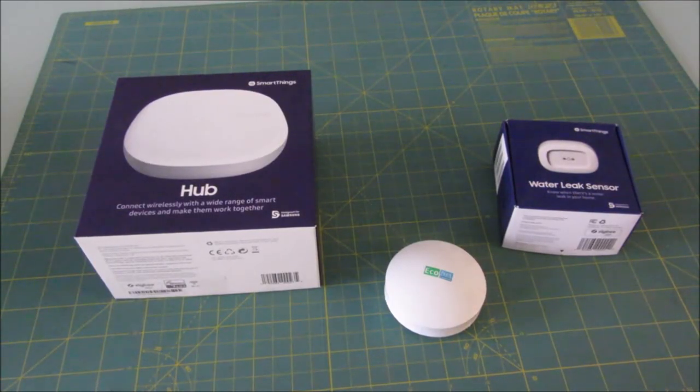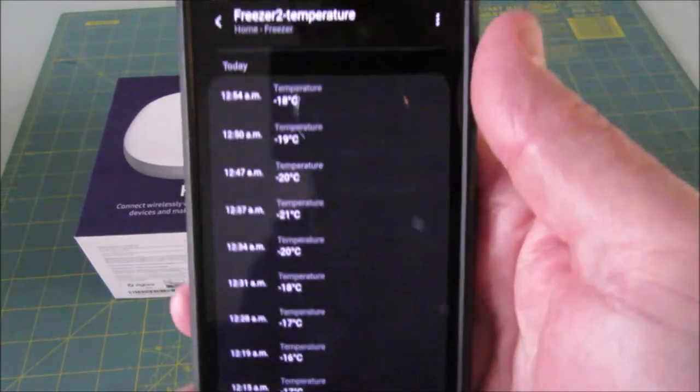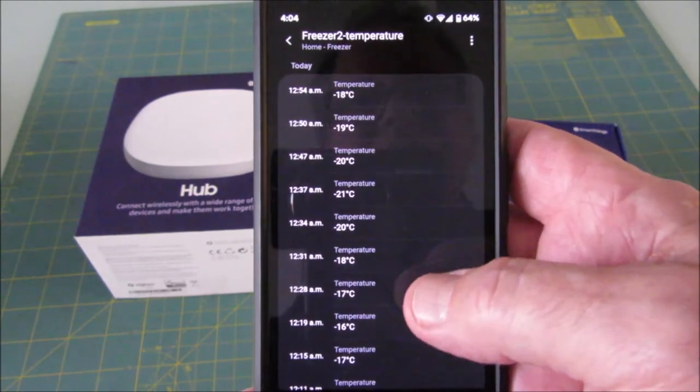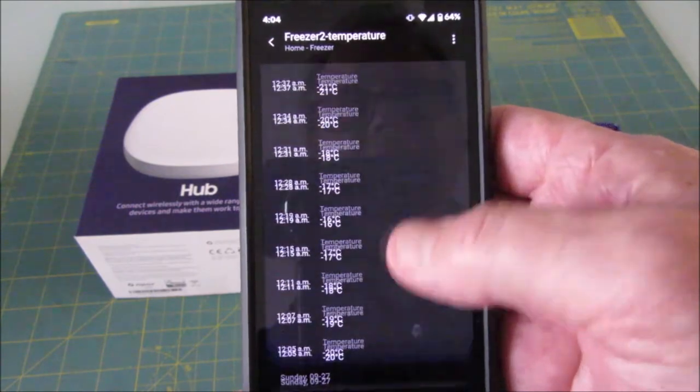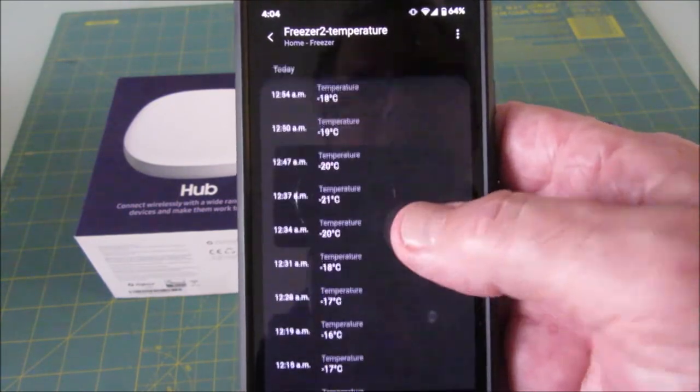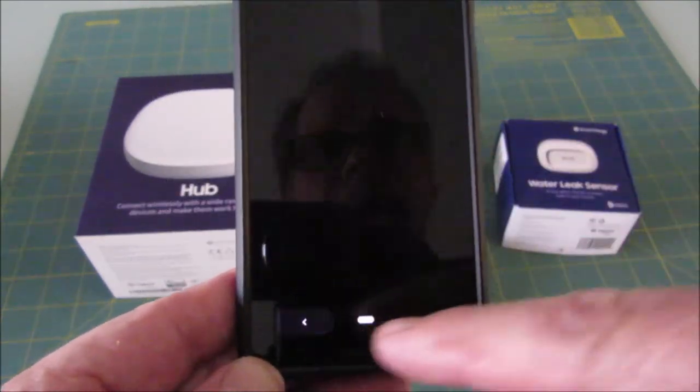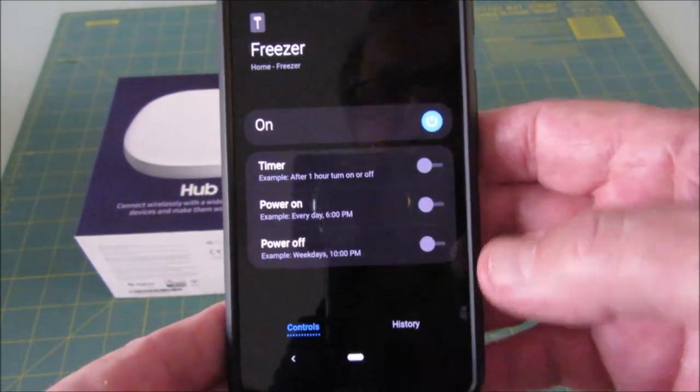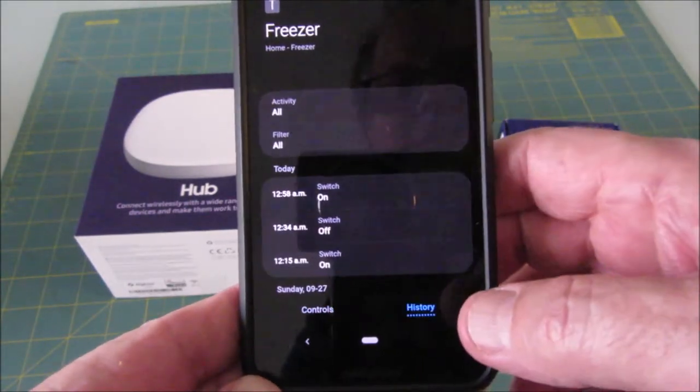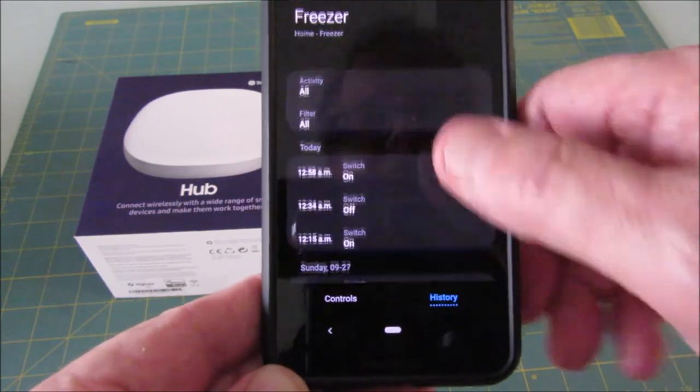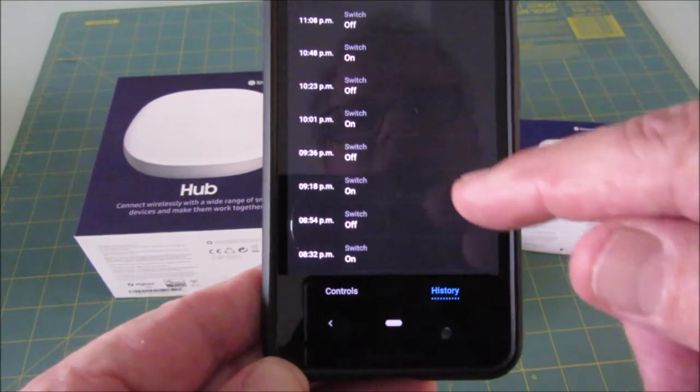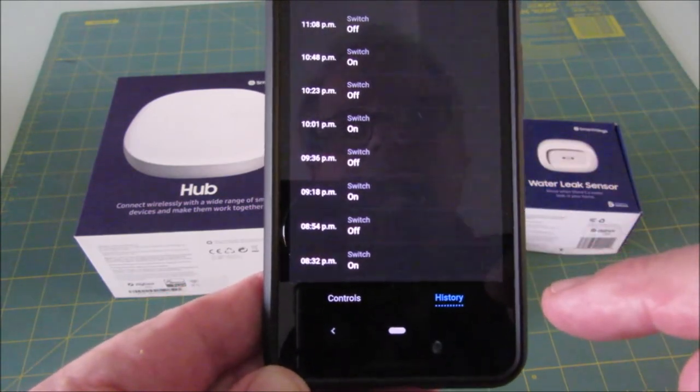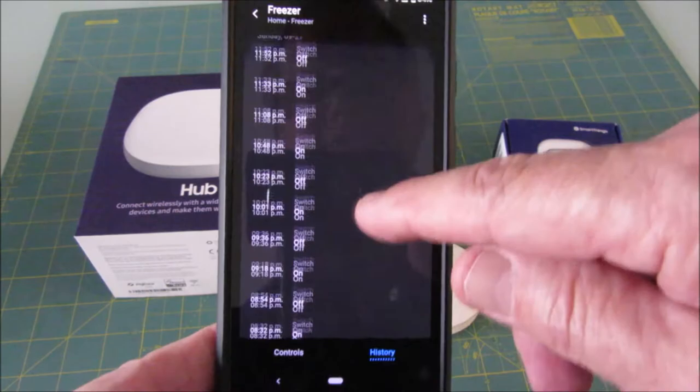All right I just wanted to show you the log here of the freezer temperature. You can see here basically it's keeping it between minus 16 and minus 20 degrees, so that's working out just like we wanted. And then you could go look at the log for the power to the freezer. You can see it's on and off there about every half hour or 40 minutes. That's basically acting like a thermostat.